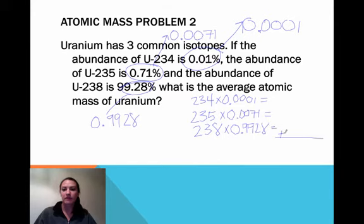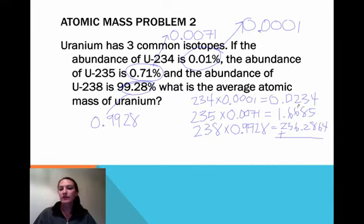Alright, we're going to get ready to add them. Okay, so let's do our multiplication first. I've got 0.0234 up here. I've got 1.6685 here. And I've got 236.2864 down here. And you can leave the decimals large at this point, especially because we're working such small numbers. And then at the very end is when I want you to cut it off to two decimals.